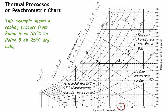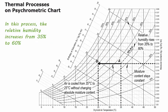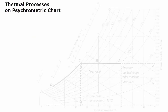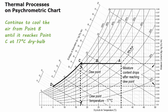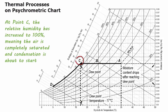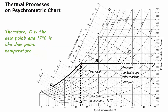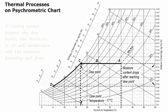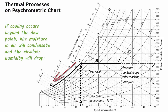This example shows a cooling process from point A at 35 degrees C to point B at 25 degrees C dry bulb. In this process, the relative humidity increases from 35% to 60%. Continuing to cool the air from point B until it reaches point C at 17 degrees C dry bulb, the relative humidity increases to 100%, meaning the air is completely saturated and condensation is about to start. Therefore, C is the dew point and 17 degrees C is the dew point temperature. If cooling occurs beyond the dew point, the moisture in air will condensate and the absolute humidity will drop.